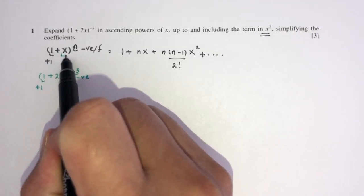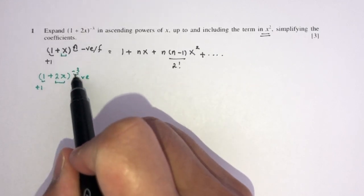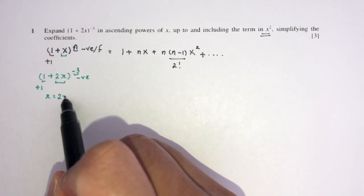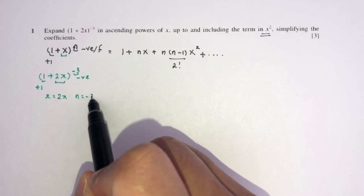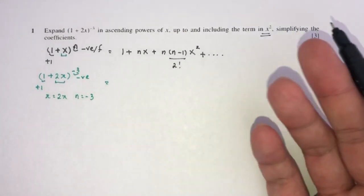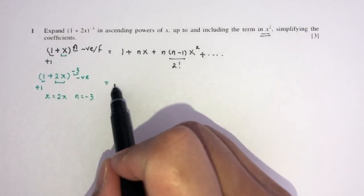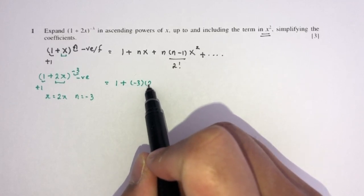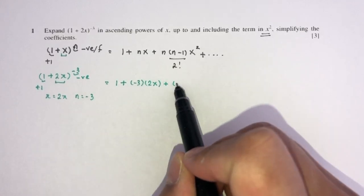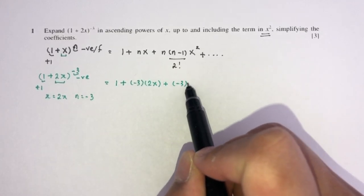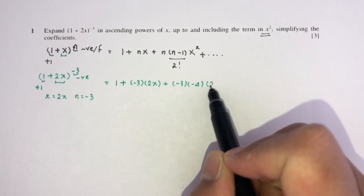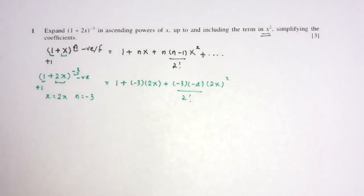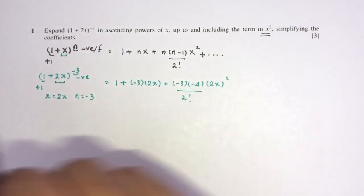Here x in the formula is replaced by 2x, and n is equal to −3. So we just substitute back: 1 + (−3)(2x) + (−3)(−4)(2x)²/2!. Now let's simplify.